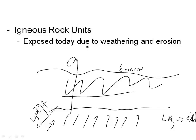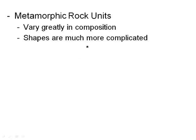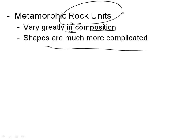Metamorphic rocks vary — these are tough to talk about because they vary in composition. Remember, a metamorphic rock comes from either an igneous or a sedimentary rock, and then they're exposed. Their shapes can be really complicated when you're trying to figure them out. So there are three main kinds of rock units: metamorphic, igneous, and sedimentary, which we break down with colors on the maps.